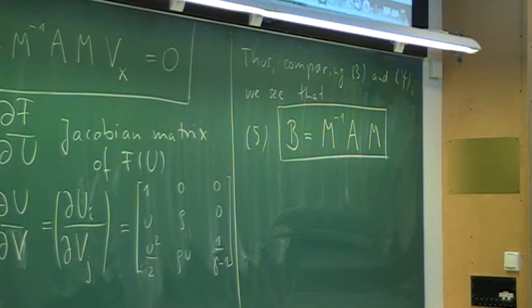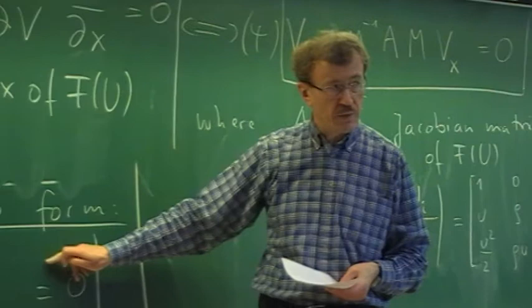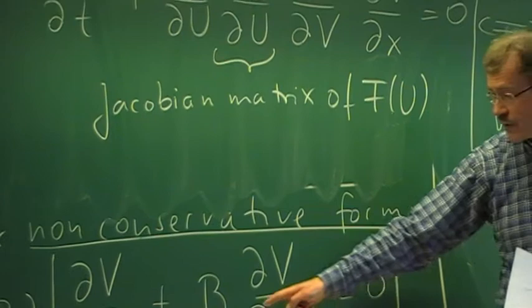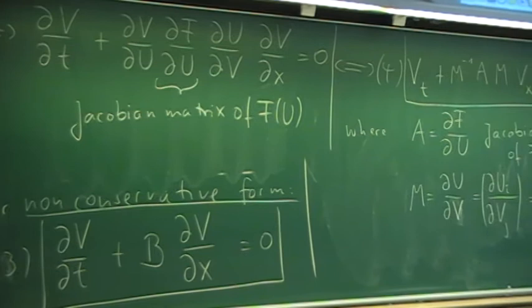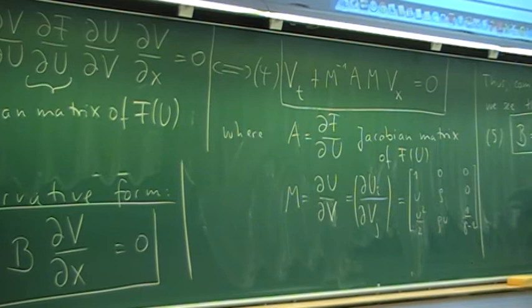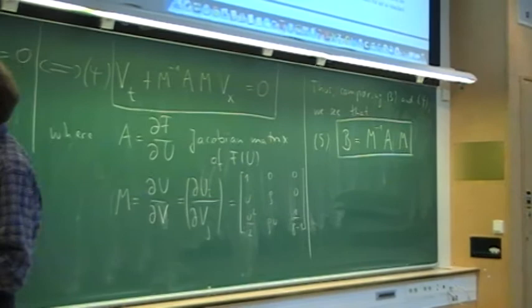Why do we do this? The reason is that it turns out it's much easier to work with the non-conservative form than with the conservative form. It is more pleasant to determine the eigenvectors and eigenvalues of B than of A — deriving A requires more work. So using the non-conservative form makes the calculation easier.